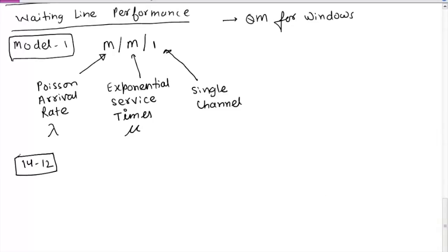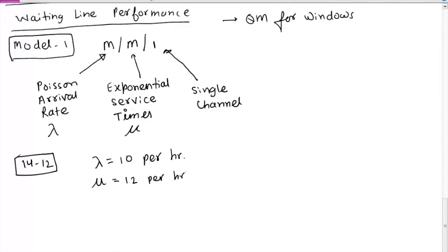This is problem 14-12 from the book. From historical data, Harry's car wash estimates that dirty cars arrive at the rate of 10 per hour. With the crew working the wash line, Harry figures cars can be cleaned at the rate of one every five minutes. Since lambda is in terms of per hour, we convert service time to per hour as well — one every five minutes means 12 per hour.